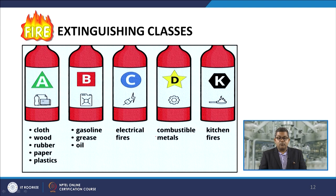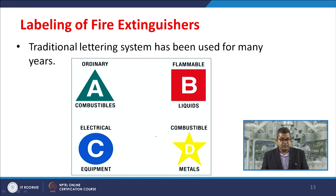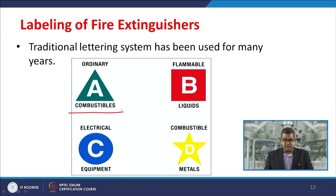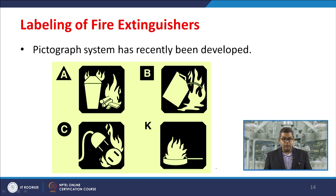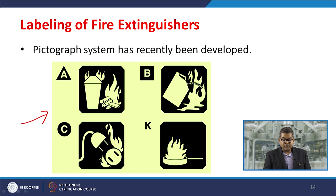The traditional lettering system has been used for many years for labelling fire extinguishers: Class A for ordinary combustibles, Class B for flammable liquids, Class C for electrical equipment, and Class D for combustible metals. Nowadays this has been replaced with pictographs. The pictograph system is based on visual figures for Class A, B, C, K, etc. This is much easier to understand for workers who may be illiterate, as they can visualize the classes based on these pictographs.